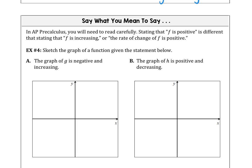Then in our last example, we need to be careful with what we say. Stating that a function is positive is different than saying that the function is increasing or that the rate of change of a function is positive. In Example 4, we want to sketch a graph that could represent the statement. The graph of g is negative and increasing.